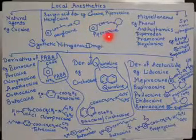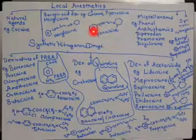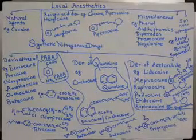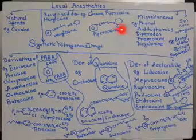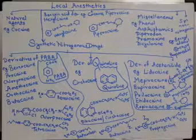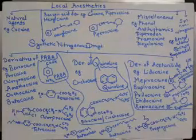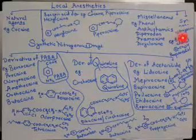Now observe the piperocaine structure. Since it is also a benzoic acid derivative, draw the aromatic ring and COO, then carbon-carbon-carbon, and note the piperidine ring. So the benzoic acid derivatives are cocaine, hexylcaine, and piperocaine.